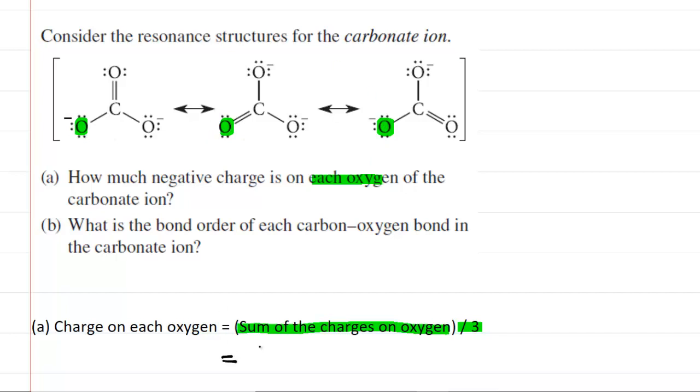So for example, in the first structure, you ask yourself, what is the charge on that oxygen? And you can see by this minus sign right here that it's equal to negative one. Then in the middle structure, there is no sign indicated, so we can assume that that oxygen is neutral. And then finally, in the third structure, we have another negative charge.